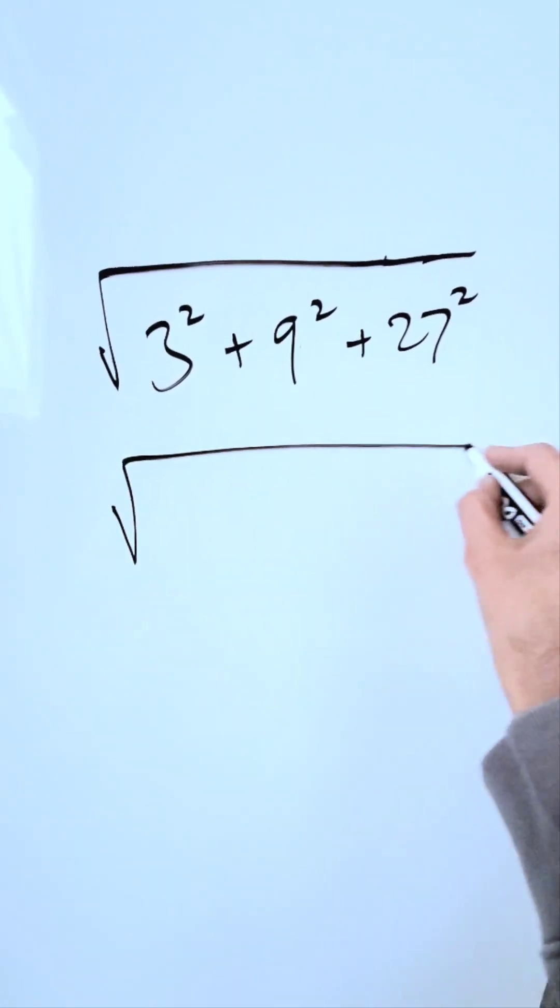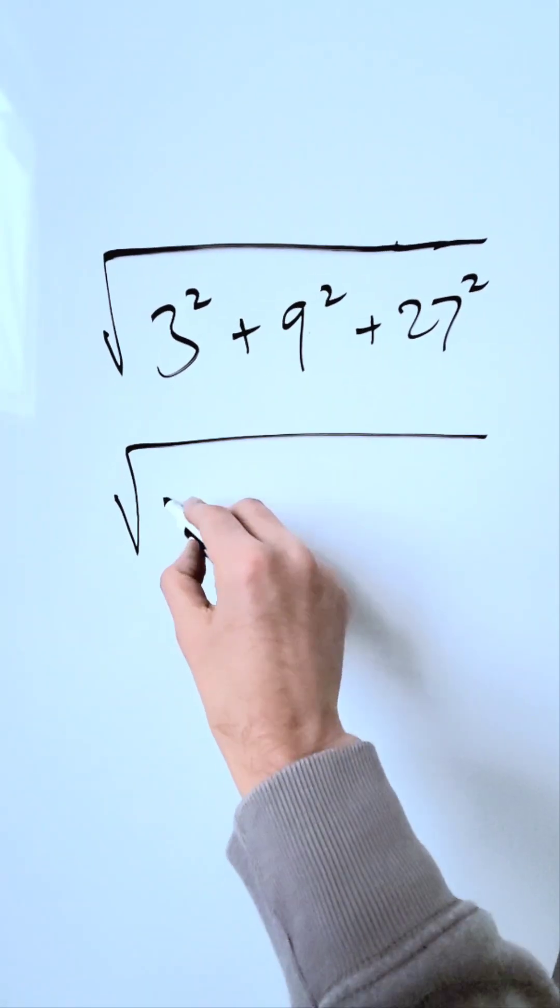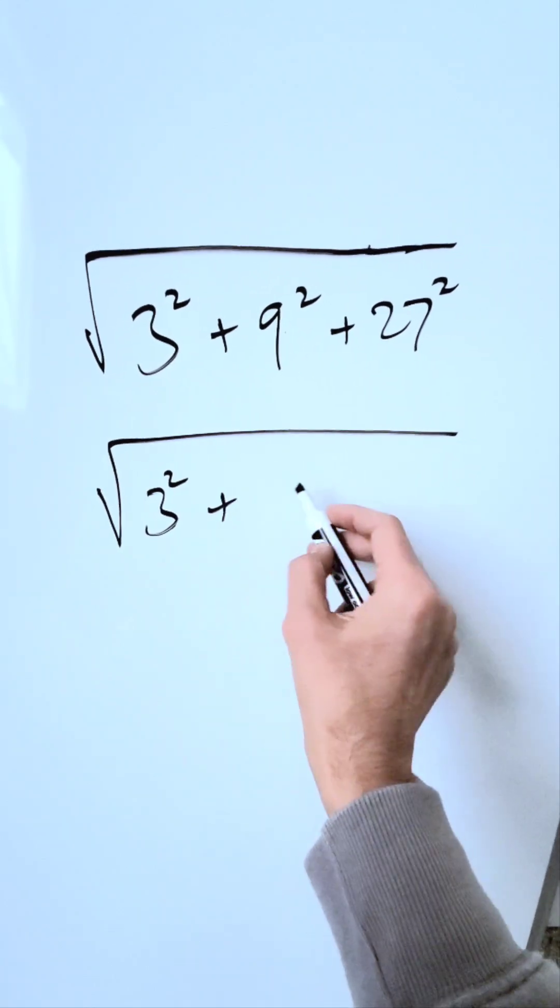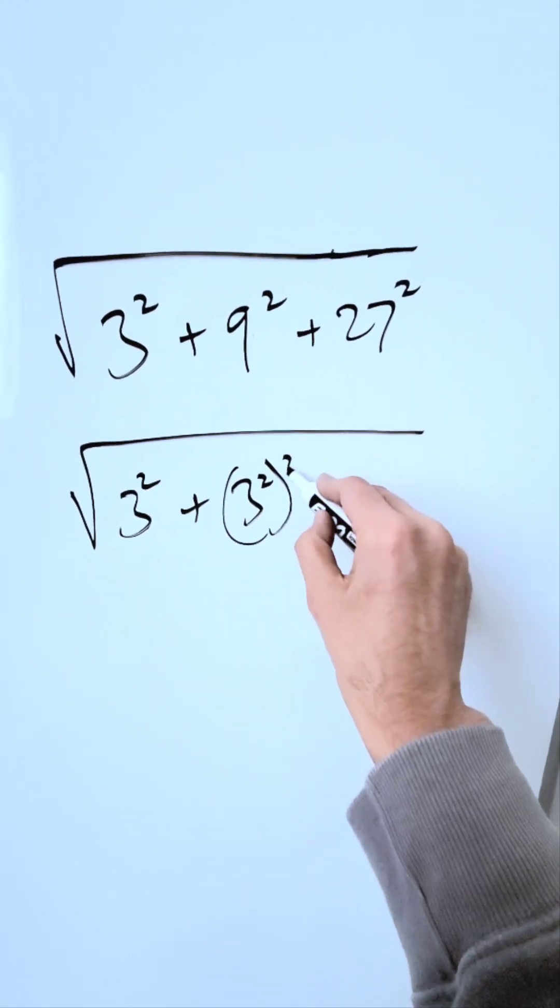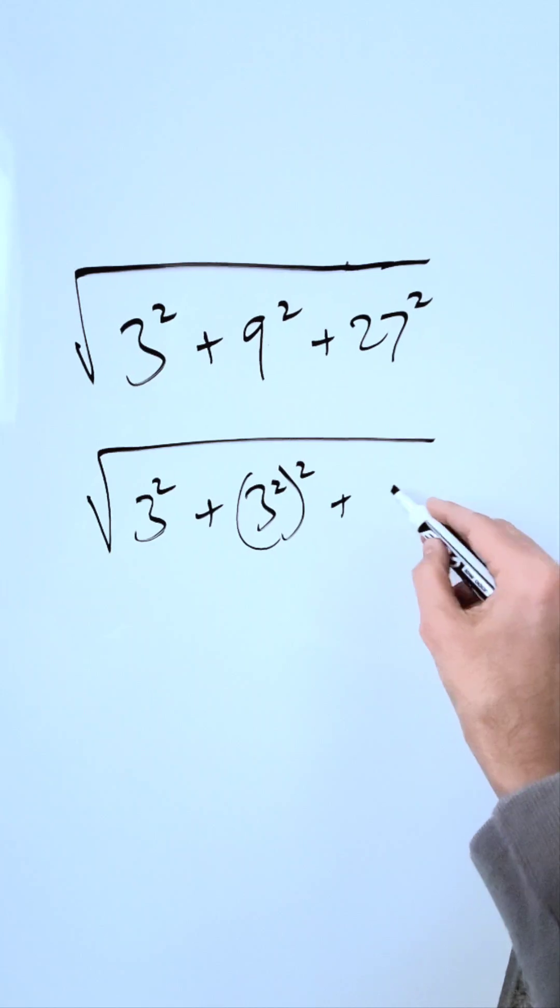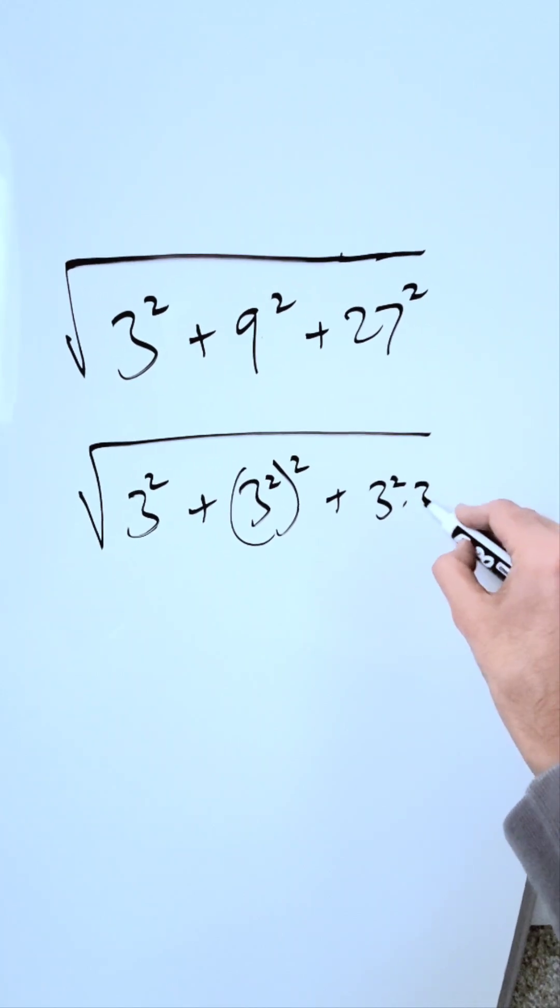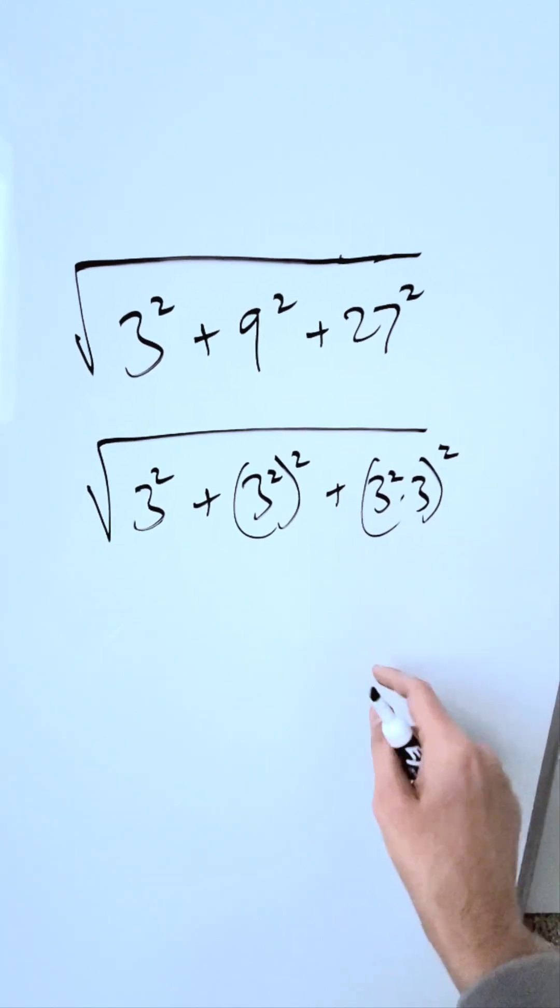I will convert everything into bases of 3. This already is as is. It stays the same, 3 squared. You know 9 is 3 squared and that's to the power of 2. You know 27 is 3 squared which is 9 times 3, and all of that is to the power of 2.